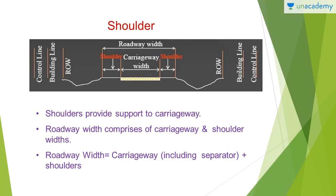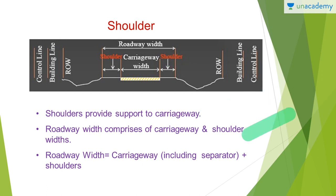Next we have a look at the shoulder. Shoulders are provided next to the carriageway width on each side, and they provide structural support to the carriageway. Roadway width comprises carriageway and shoulder widths — that is, roadway width equals carriageway including the separators plus shoulders.